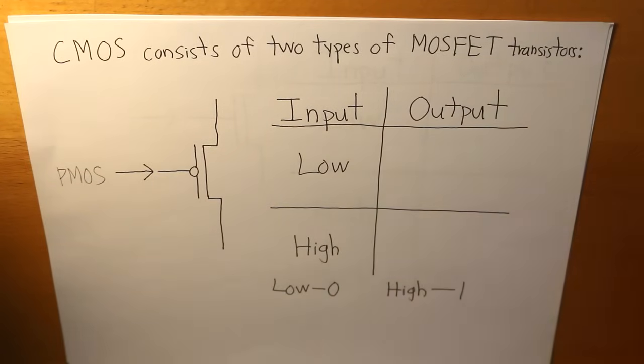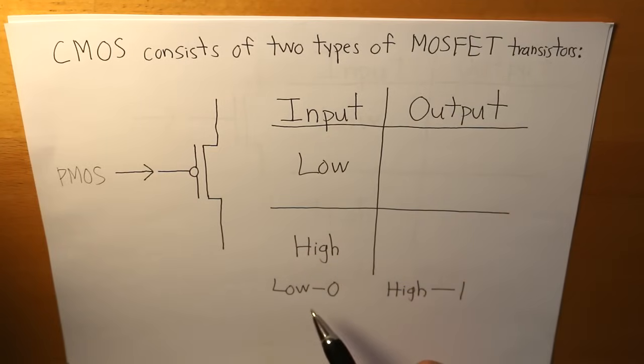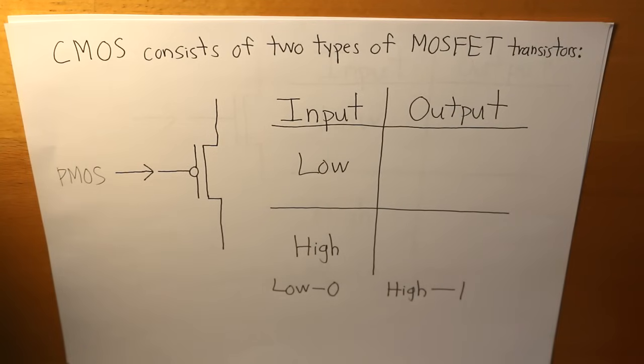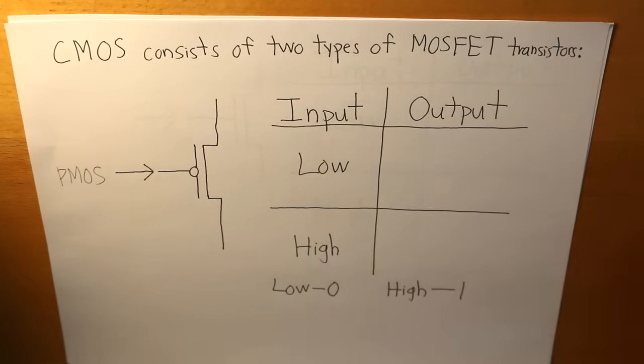...is that whenever you input something it's going to give us the opposite result. So in simple terms what we have is an input with a low and a high, and that low and high can represent binary numbers, so low represents zero and high represents one.